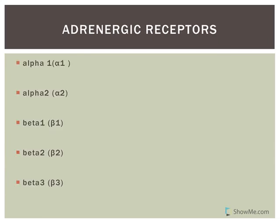Alpha-2 will not be covered. Beta-1 adrenergic receptors - the only example is in the heart: if talking about cardiac muscle or the cardiac conduction system, the receptors for epinephrine and norepinephrine are beta-1 adrenergic receptors. Beta-3 - the only example is adipose tissue.